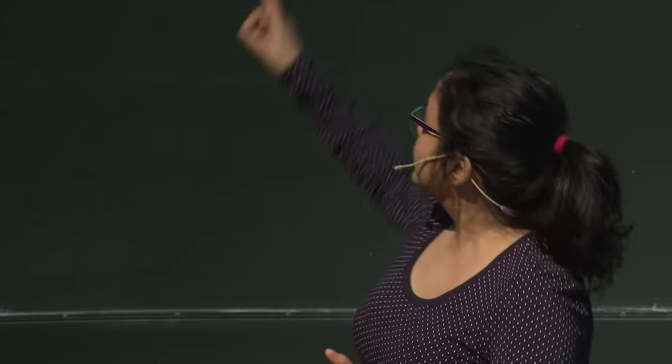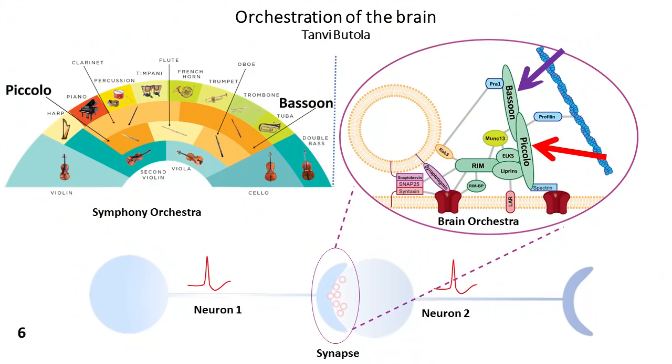You might be aware that the information traveling in the brain travels in the form of electrical or chemical signals. So you see the electrical signal traveling along neuron one. It reaches the synapse, and when reaching the synapse, it releases some chemicals — let's say a message. And this message is received by neuron two, which again fires an electrical signal, and hence the information travels on.